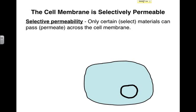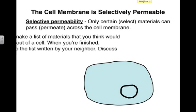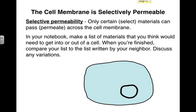We refer to the membrane as being selectively permeable because it only allows certain molecules to cross. On a whiteboard or in your journal, make a list of materials — these would be molecules, try to be specific — that you think would need to get into the cell or would need to get out of the cell. When you're finished, compare your list to your neighbor's and discuss any differences. Pause the video now and go ahead and make your list.